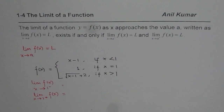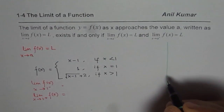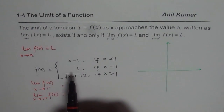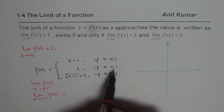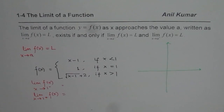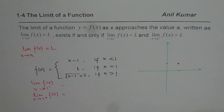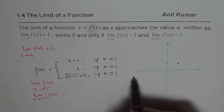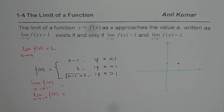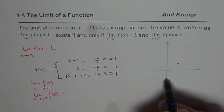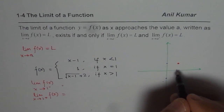Before getting further into the details, let's try to sketch the function so that it becomes easier to explain and understand. So f of x equals 1 if x equals 1 — let me make a scale here. This is 1 for us, so at x equals 1 we have the point at value 1. If x is less than 1, that means on the left side, it is the straight line x minus 1.